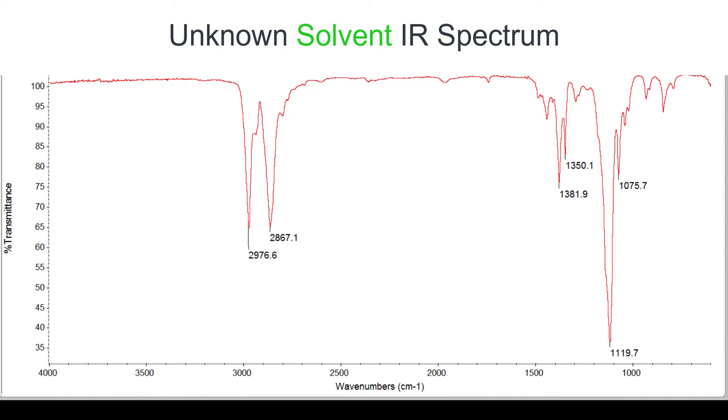When you compare the peaks in those spectra it should be really obvious what your unknown solvent is. Remember to look for peaks that match in the fingerprint region as well as the functional group region. The fingerprint region contains some really good information that should help you distinguish between the three possible solvents.